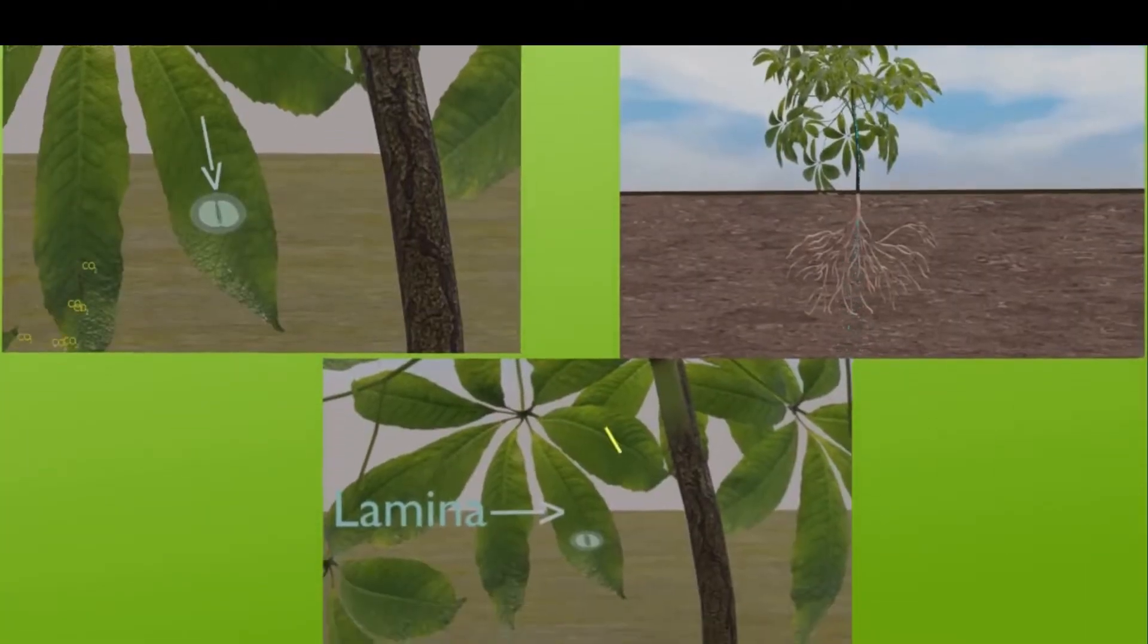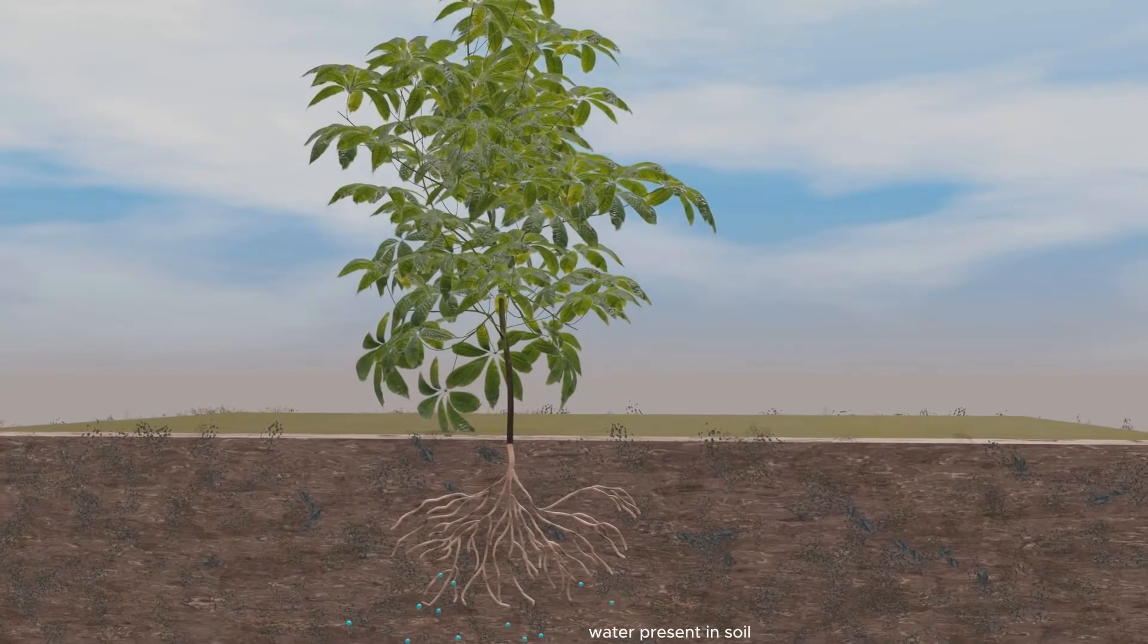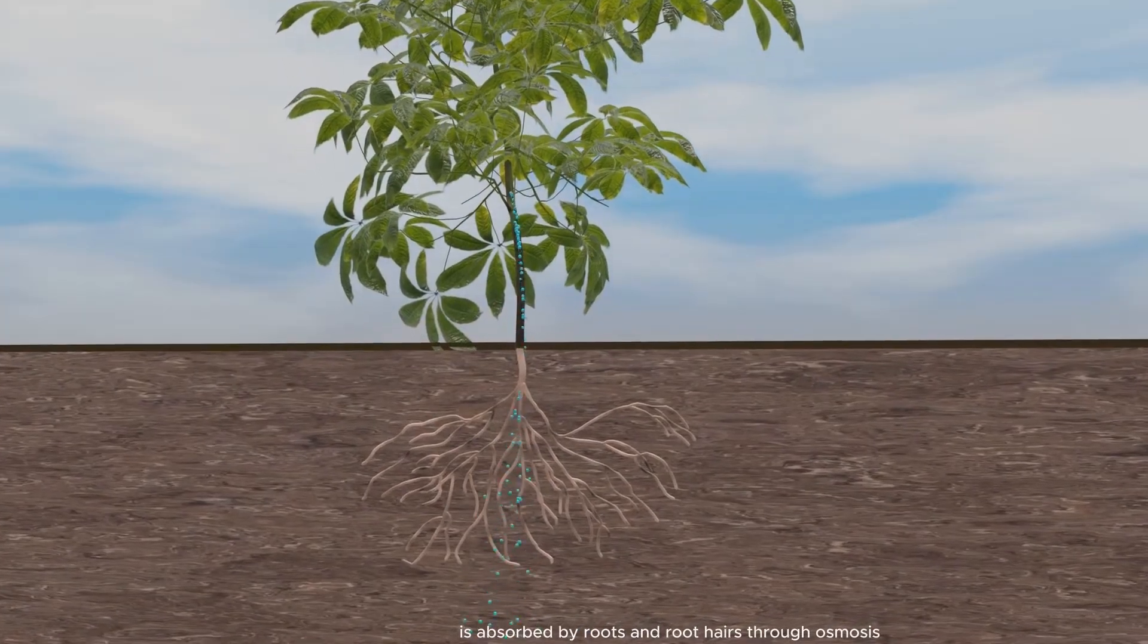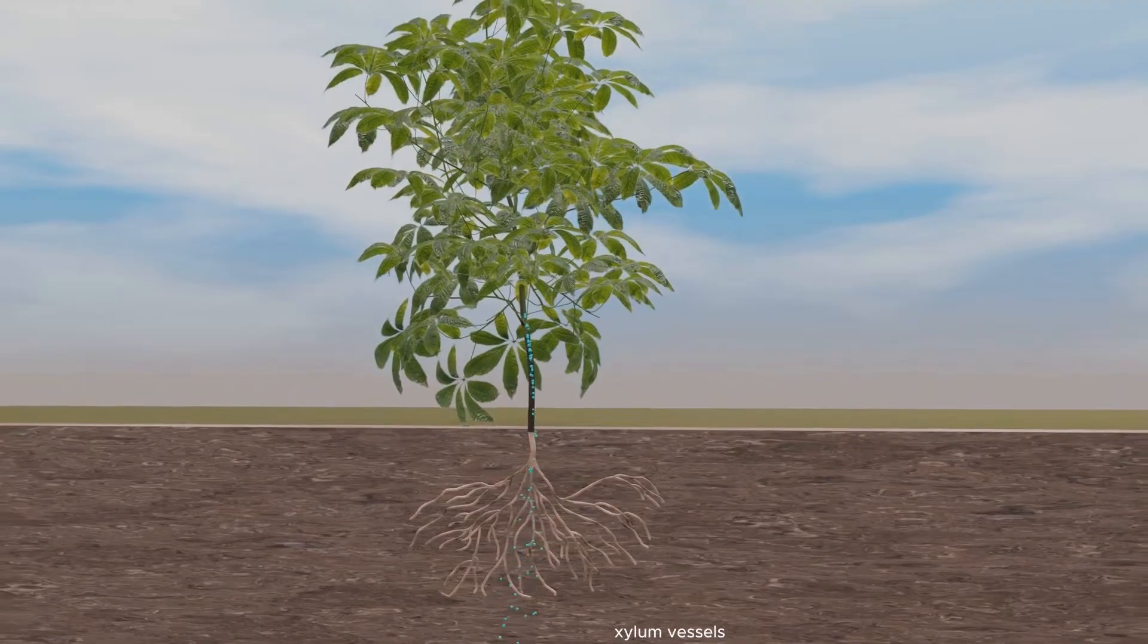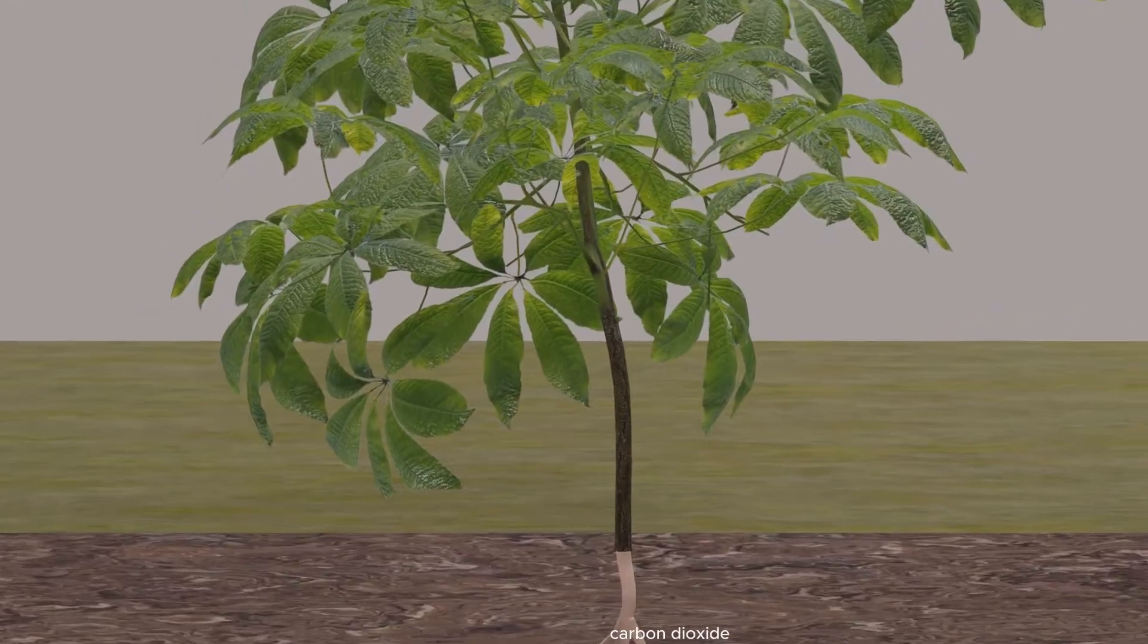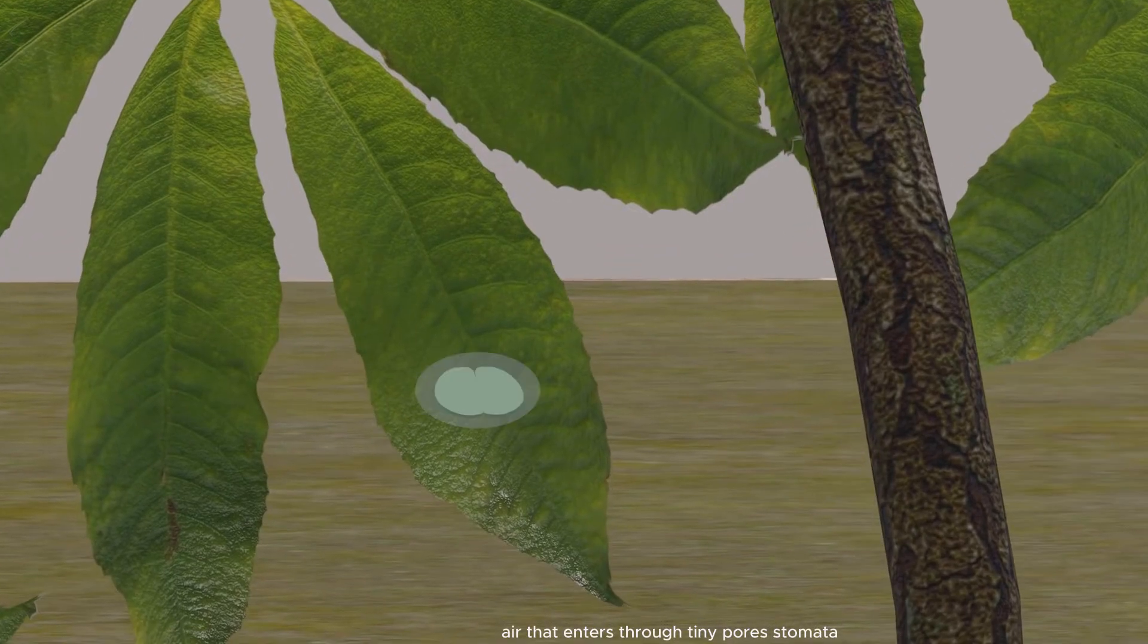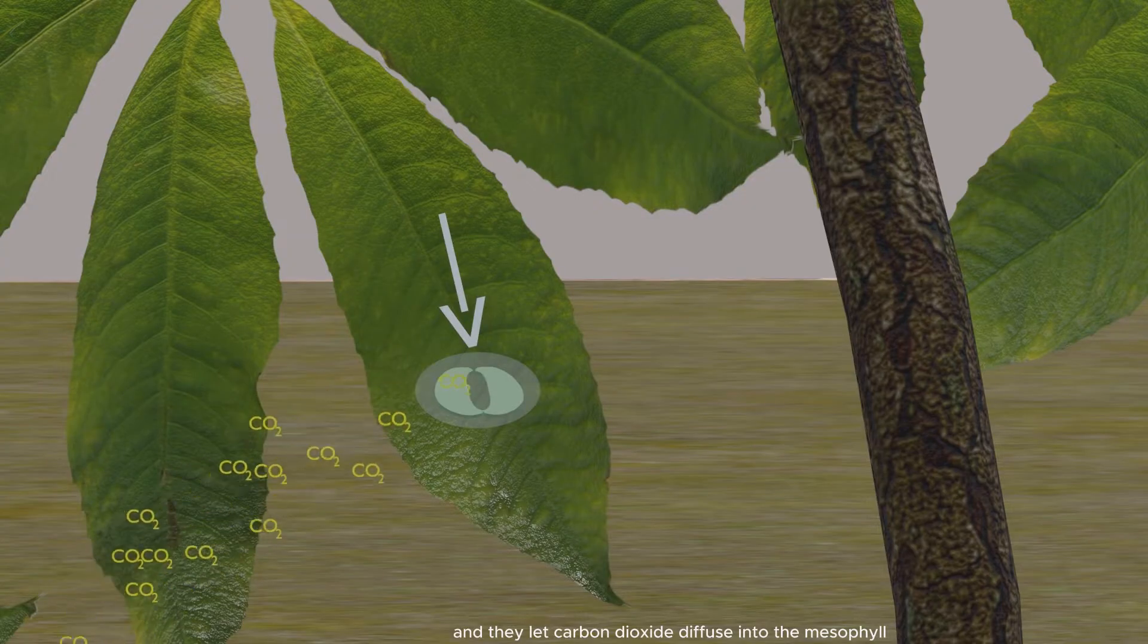Water present in soil is absorbed by roots and root hairs through osmosis. This water is eventually transported to leaves through xylem vessels. Carbon dioxide from air enters through tiny pores called stomata found on the surface of leaves in most plants. They let carbon dioxide diffuse into the mesophyll layer and oxygen diffuse out.